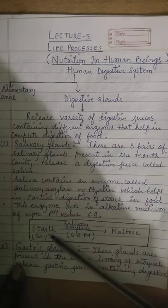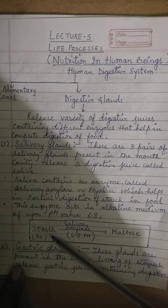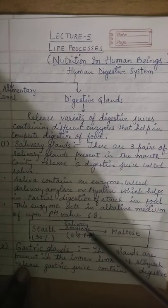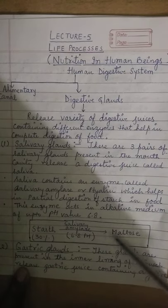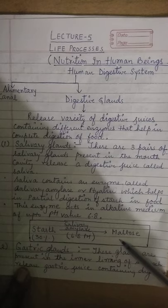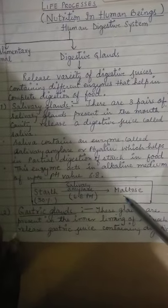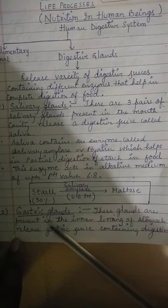Salivary amylase breaks down this longer chain of carbohydrate molecules into smaller carbohydrate units. Now we come to the next digestive gland.